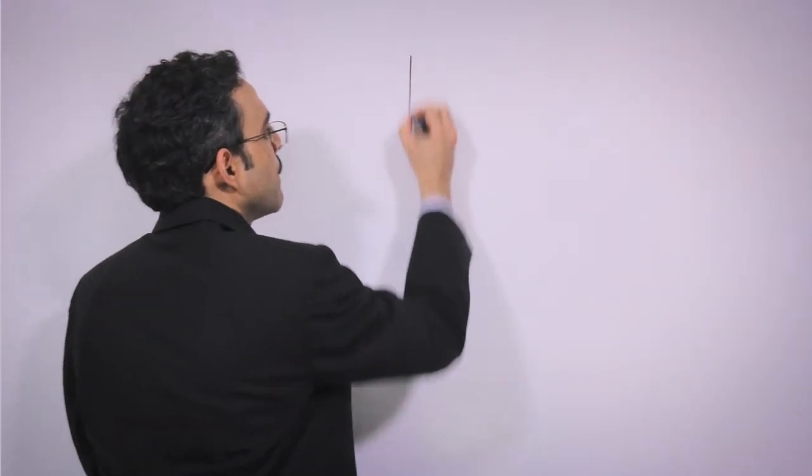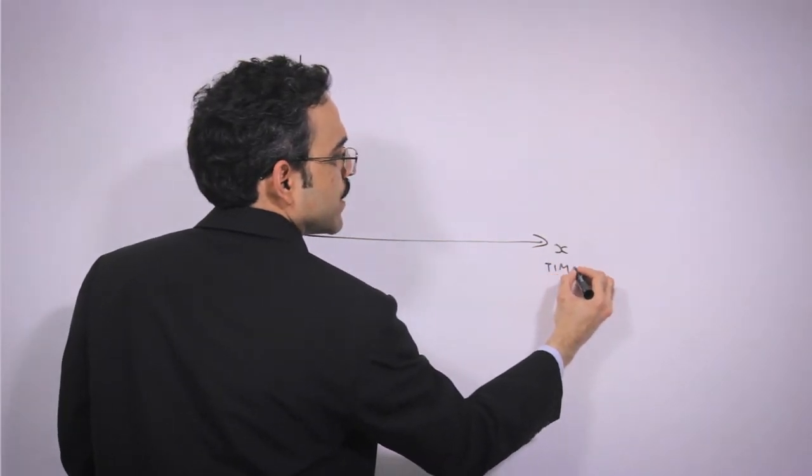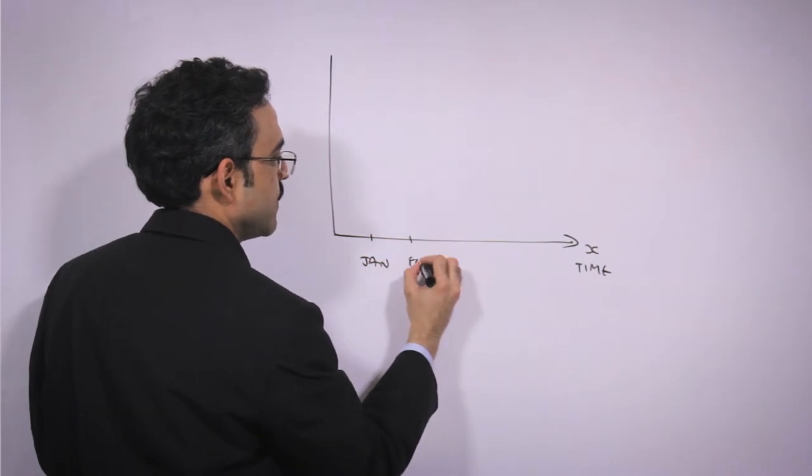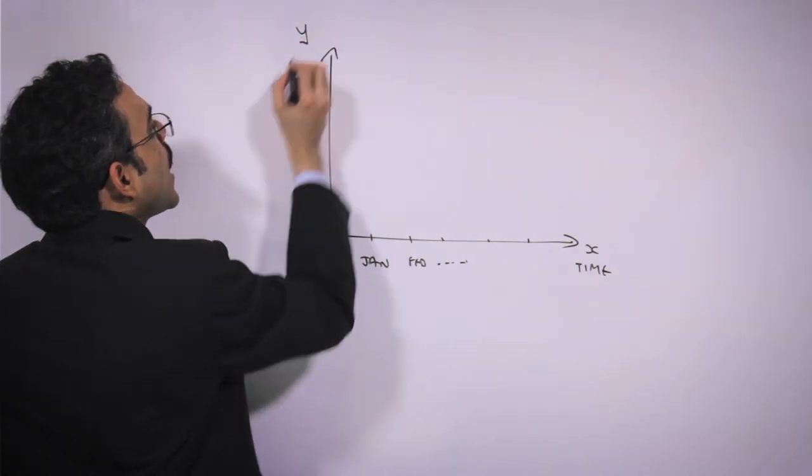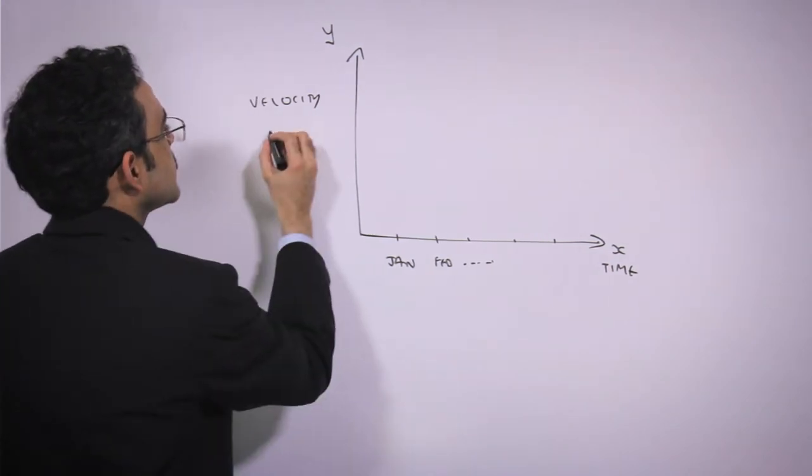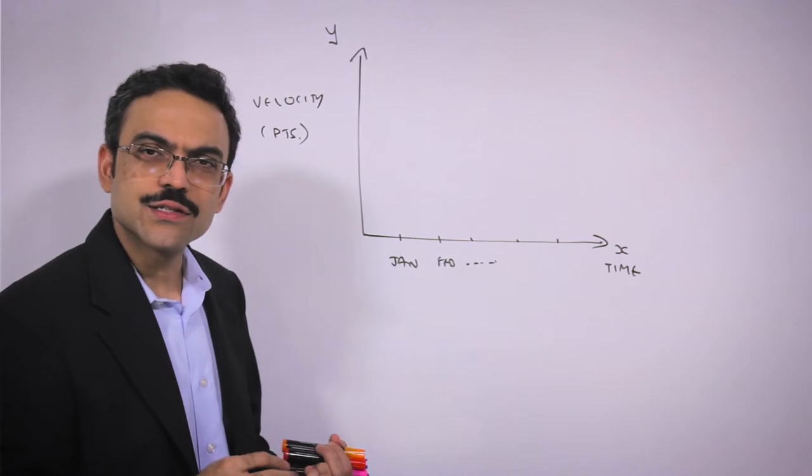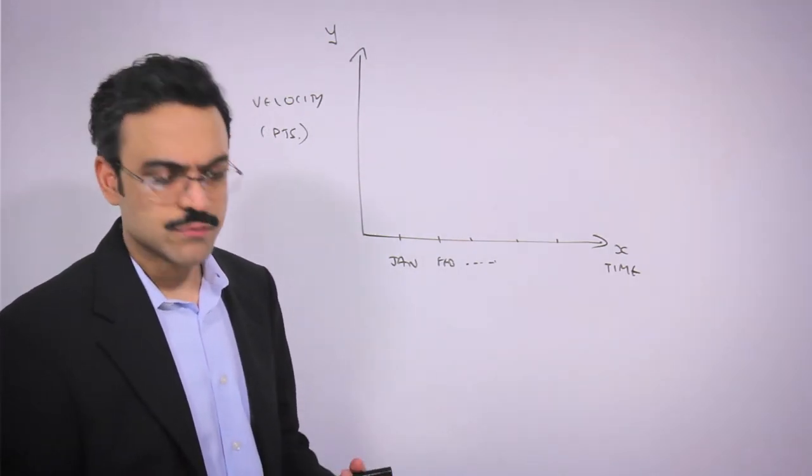Usually velocity is plotted as a graph or as a trend something like this. On the X axis we have time, so this could be months, Jan, Feb and so on. And on the Y axis we plot velocity, which is usually in points but think of it as some kind of indicator of the number of features that were delivered over time.